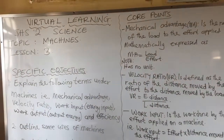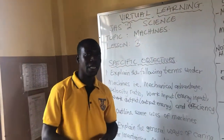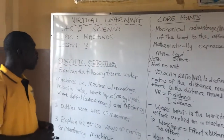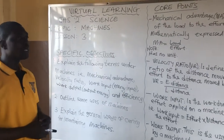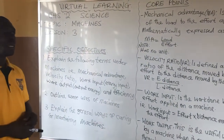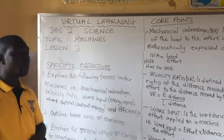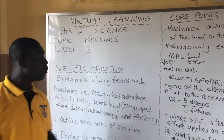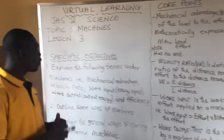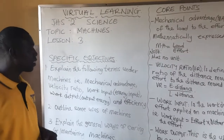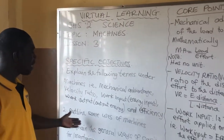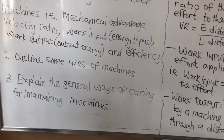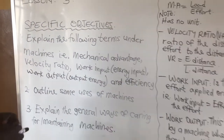I'll urge you to pay attention so that we can all achieve our objectives for the day. By the end of this lesson, you should be able to explain the following terms: mechanical advantage, velocity ratio, work input or energy input, work output or energy output, and also efficiency. You should also be able to outline some uses of machines, and explain the general ways of caring for or maintaining machines.